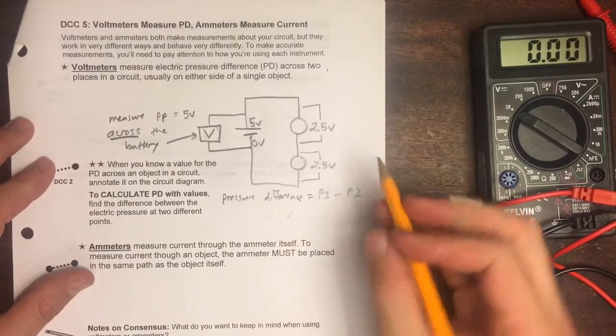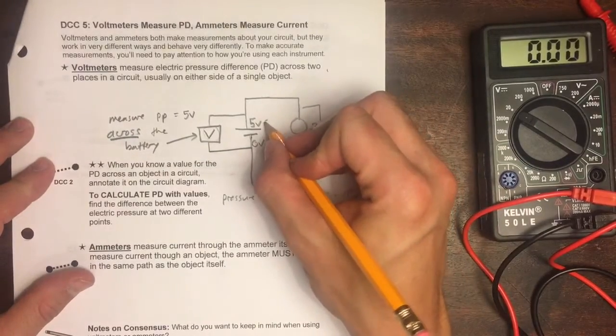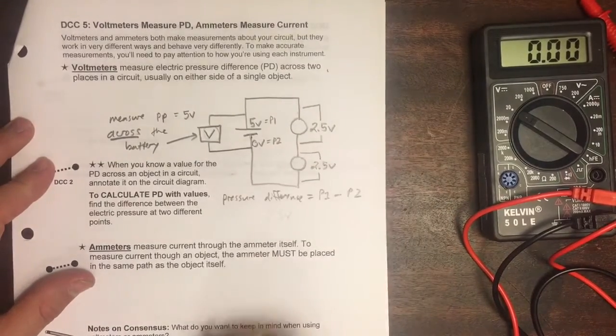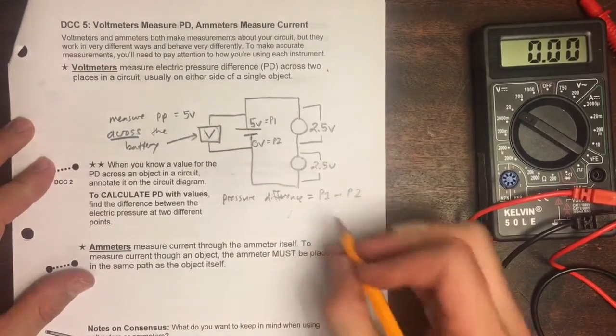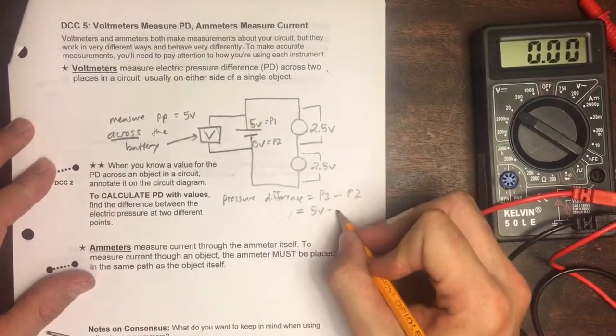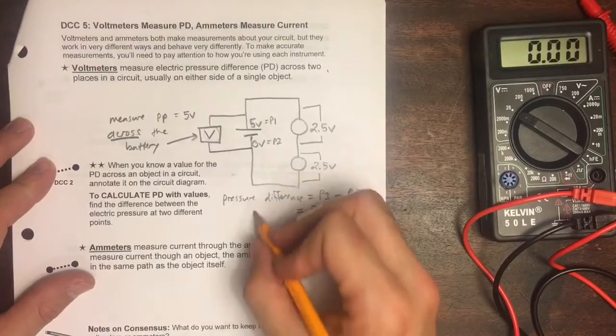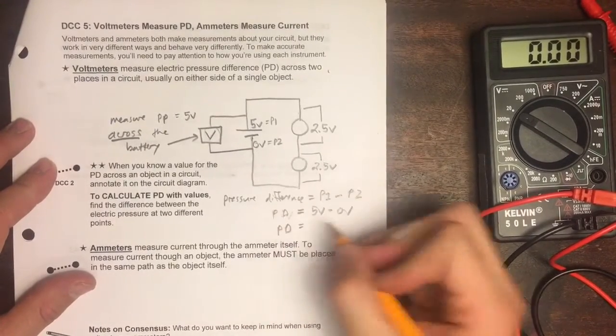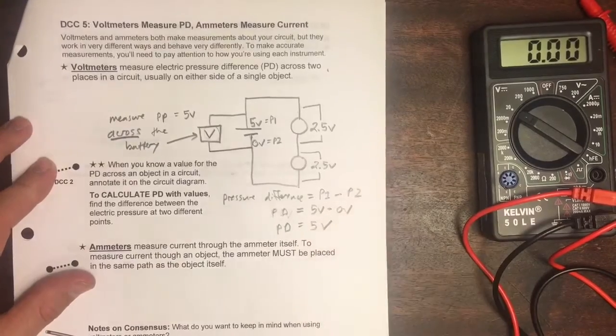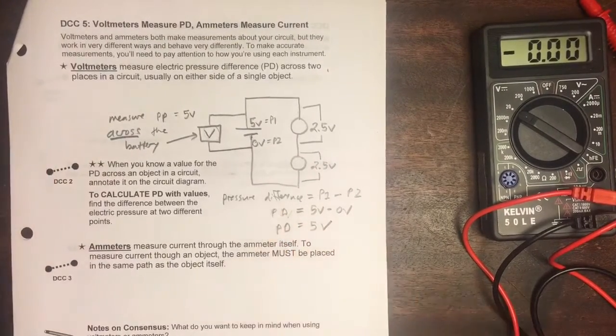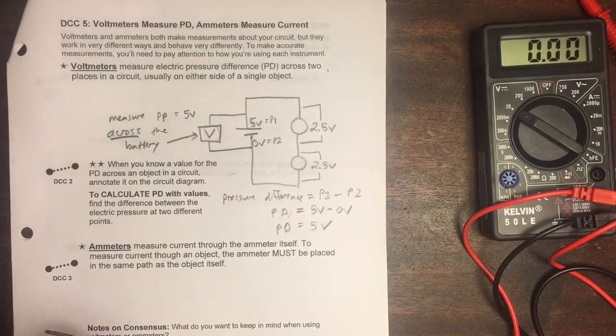So if we imagine that this position is P1 and this position is P2, all the voltmeter is doing is saying, okay, what's five volts minus zero volts. That's the pressure difference. This is a really easy subtraction problem. Obviously the answer is five volts, but I'm just pointing out the word difference here has real mathematical meaning.